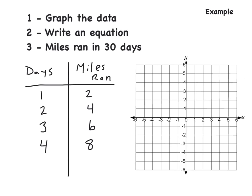Here's an example. We have three things to accomplish: first, graph the data we're given; second, write an equation for the data; third, find how many miles we ran in 30 days. So the very first thing we have to do is graph the data. Here's the data we have: days and miles ran. Our days are our x values, and miles ran is our y.